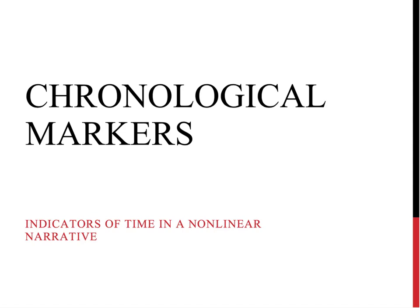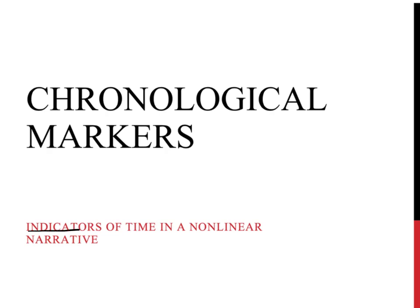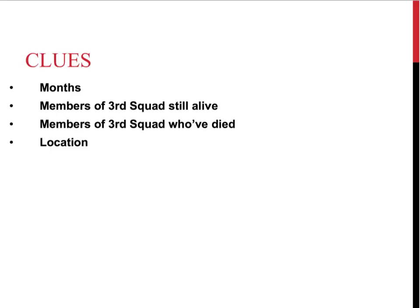I'm using the term chronological markers to suggest indicators of time in a non-linear narrative. Chronological obviously means time, marker is an indicator, and so these are going to be indicators of time within our narrative. As you know, Going After Cacciato is a non-linear narrative told in three parts, and we are in the process of trying to figure out the order of events in each of those parts. While you're reading, your chronological markers are these clues right here.